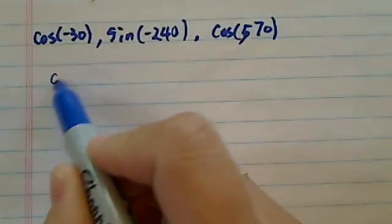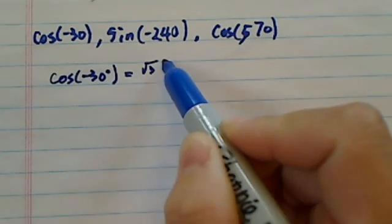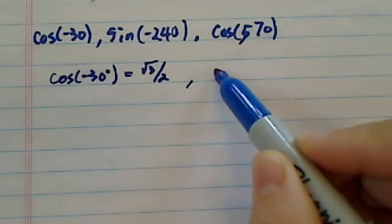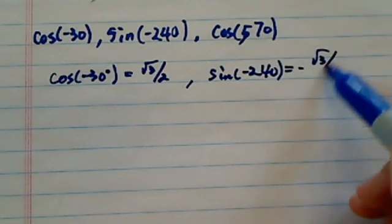All right, so here's the answer to your questions. Cosine of minus 30 degrees is radical 3 over 2. And sine of minus 240, the answer is minus radical 3 over 2.